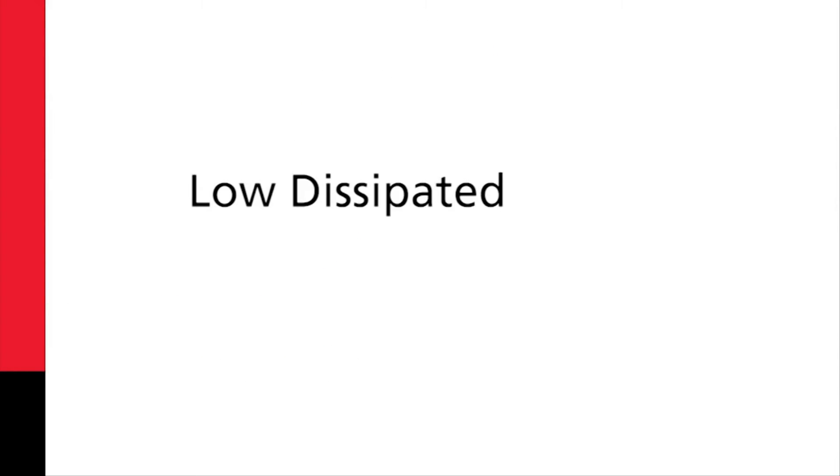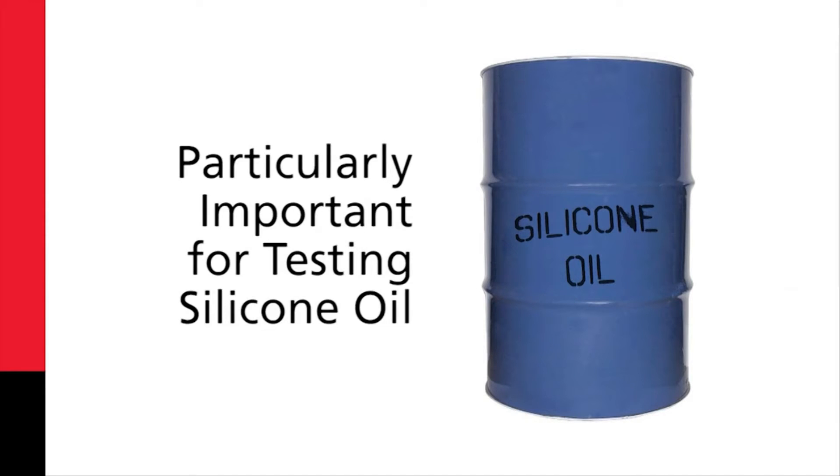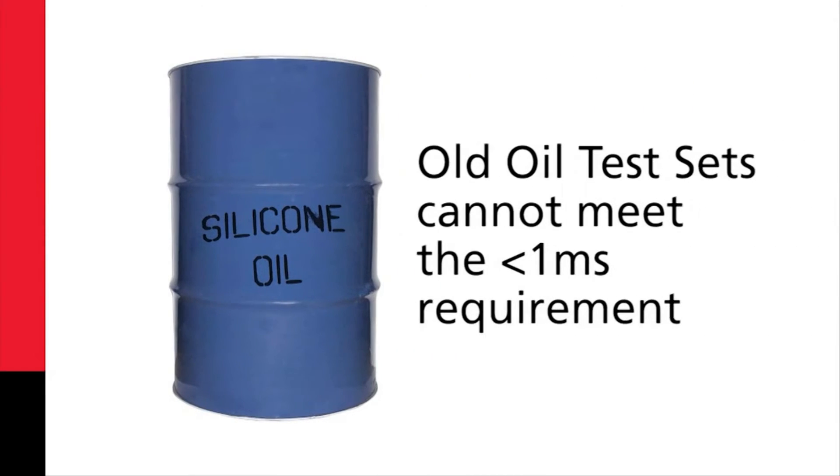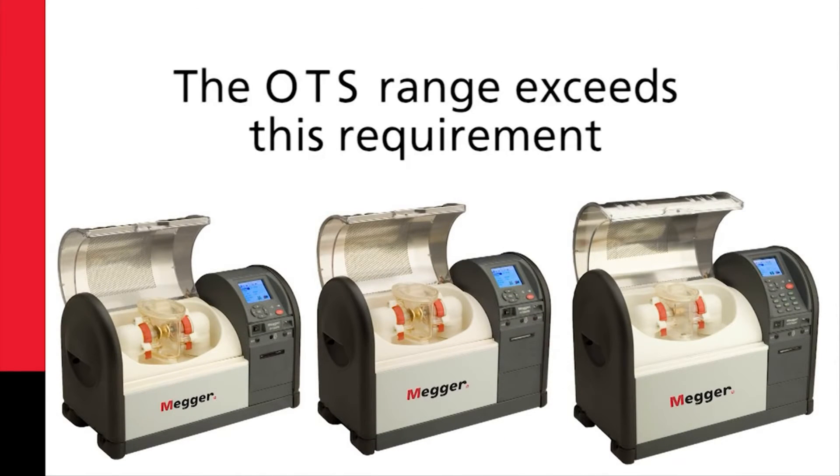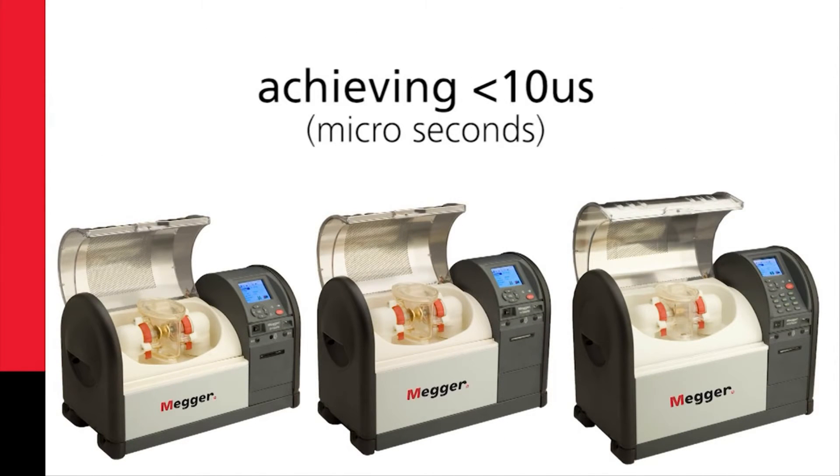Low dissipated power and fast breakdown is particularly important for testing silicon oil. Many old oil test sets cannot meet the less than one millisecond requirement for silicon oil. The OTS range exceeds this requirement, achieving less than 10 microseconds.